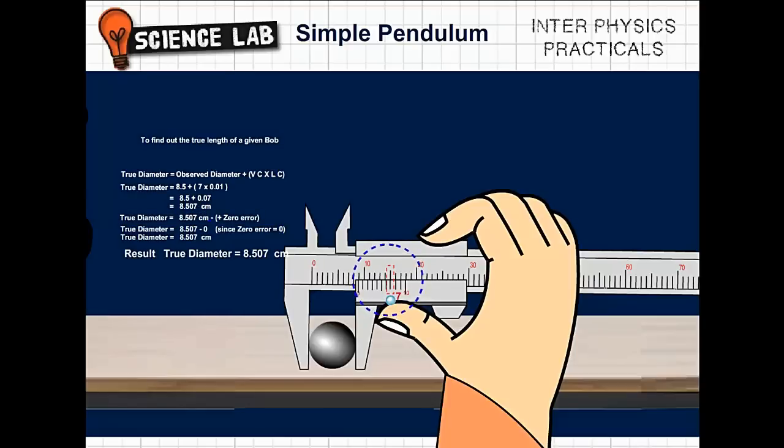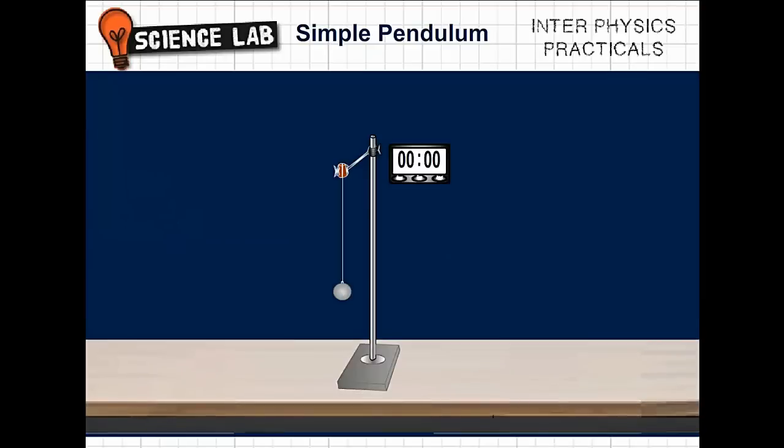A simple pendulum has a pendulum bob suspended to a stand using a thread. An oscillation is complete when a bob passes through a point and comes back to the same point. Length of the pendulum is taken from the point of suspension to the center of the bob.